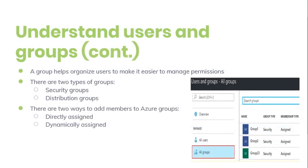A group helps organize users to make it easier to manage functions, and groups can be easily added through the portal. There are two types of groups: security groups and distribution groups. You can also use PowerShell to add groups with the New-AzureADGroup command. There are two ways to add members to a user group: directly assign or dynamically assign.